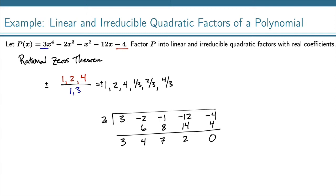That means that 2 is a zero. And that tells us that at this point, we know that our polynomial factors as x minus 2 times, and then these are the coefficients of what's left over: 3x cubed plus 4x squared plus 7x plus 2.